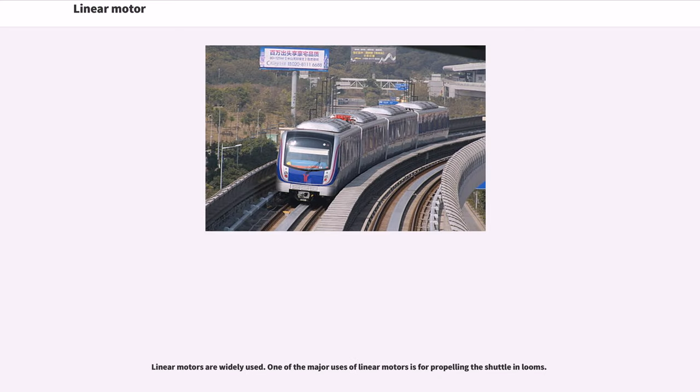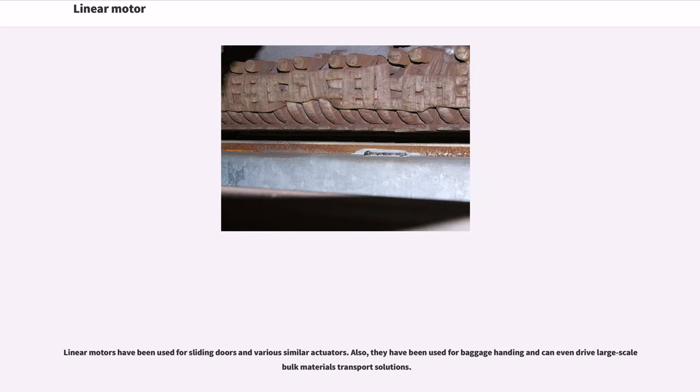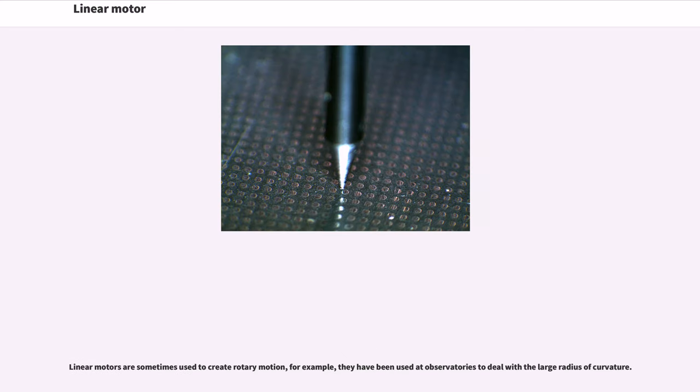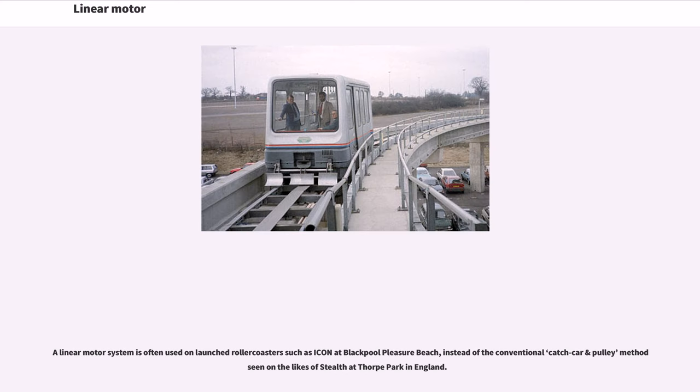Linear motors are widely used. One of the major uses of linear motors is for propelling the shuttles in looms. Linear motors have been used for sliding doors and various similar actuators. Also, they have been used for baggage handling and can even drive large-scale bulk materials transport solutions. Linear motors are sometimes used to create rotary motion, for example, they have been used at observatories to deal with large radius of curvature.